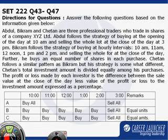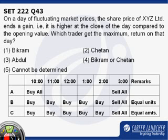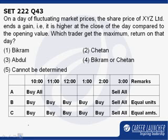With the use of this table, we are going to solve the question. This question says that during the day the market price keeps on fluctuating, and the share price ends higher at close compared to the opening value, and we have to find who got the maximum return on that day.